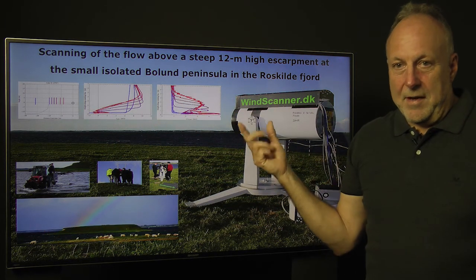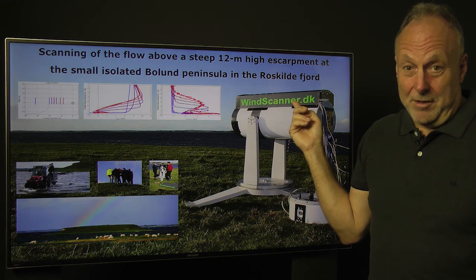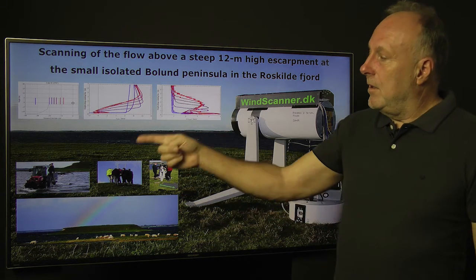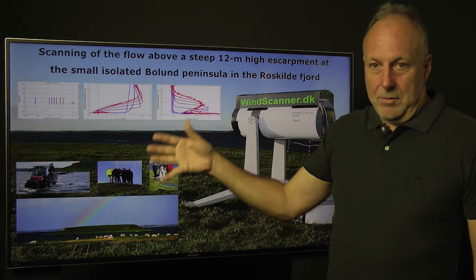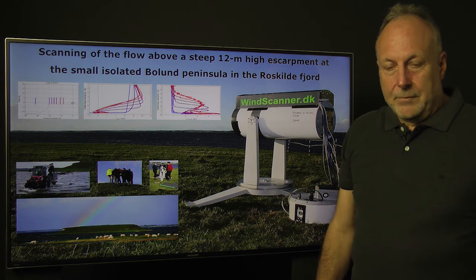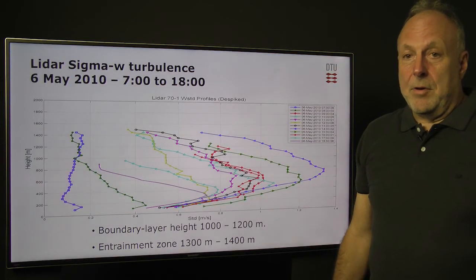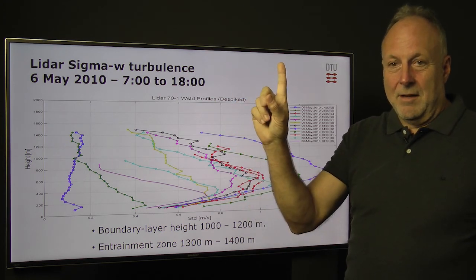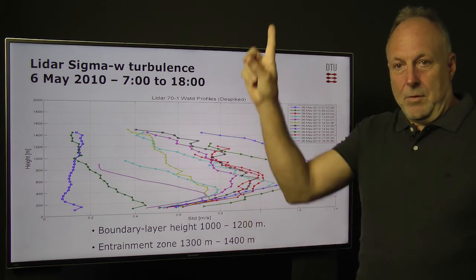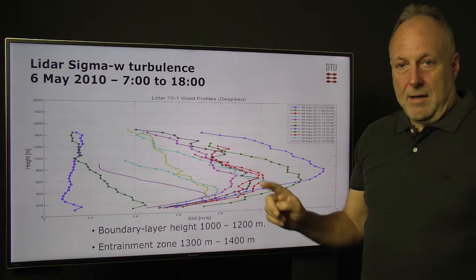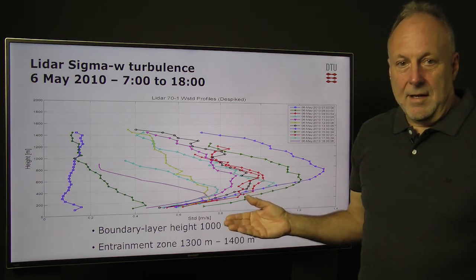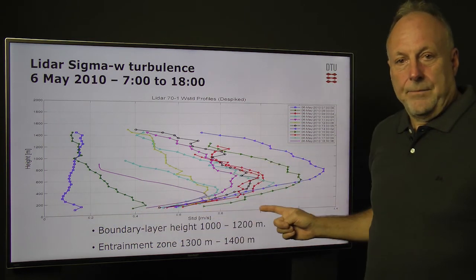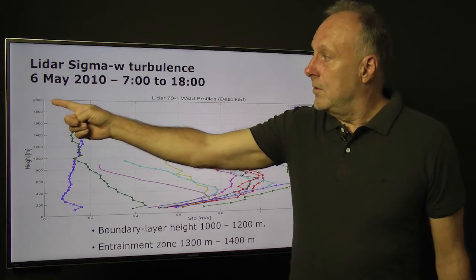You can also measure turbulence because the instrument is very fast. It samples 400 samples per second. So you can measure many profiles in very short time. And you can scan like we have done here in 2D, the wind profile and the turbulence profile. We can also point the lidar totally vertical and just keep it pointing vertical. And then we can measure the wind speed, in this case, the vertical component at many heights. And this is what we have done in this graph.